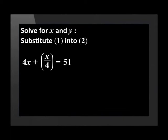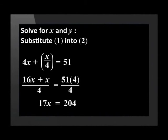Now we are ready to substitute. We substitute equation 1 into equation 2 and get 4x plus x over 4 equals 51. We already have the x's on one side so let's multiply through by the LCD of 4. We get 16x plus x all over 4 equals 51 over 4. Now drop the denominator and simplify.